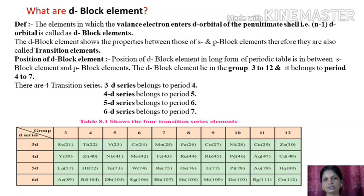There are four transition series: 3d series belongs to period 4, 4d series belongs to period 5, 5d series belongs to period 6, and 6d series belongs to period 7. Now let us discuss table 8.1 which shows the four transition series elements. As you know, the d-shell has a maximum of 10 electrons in its orbit, so all these series include 10 elements.